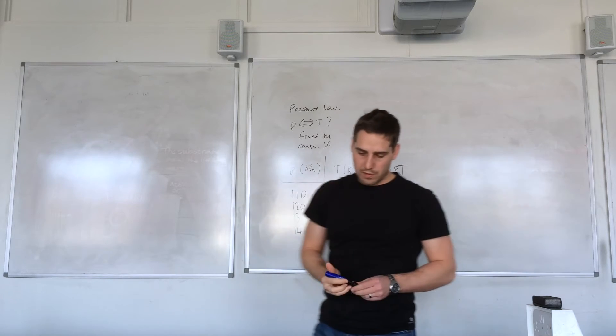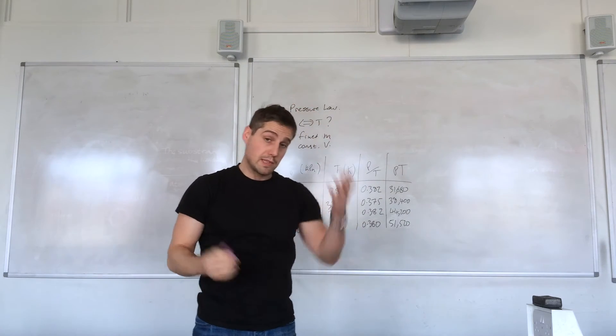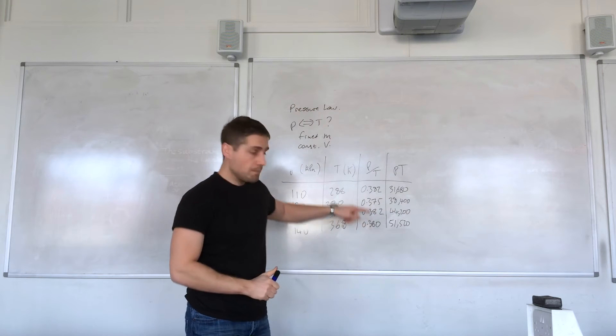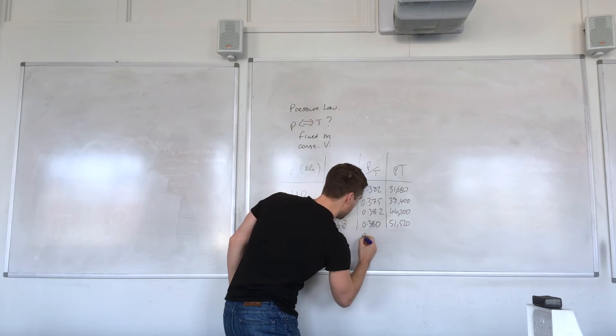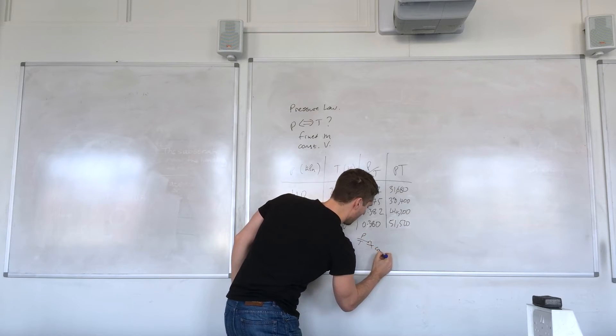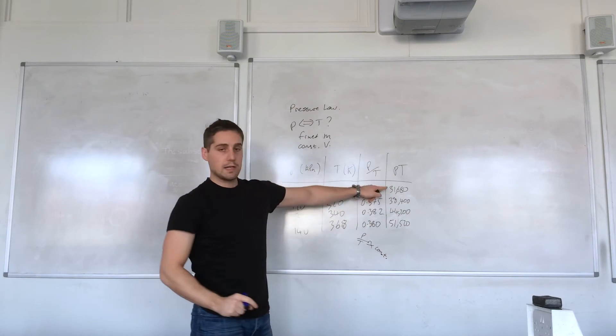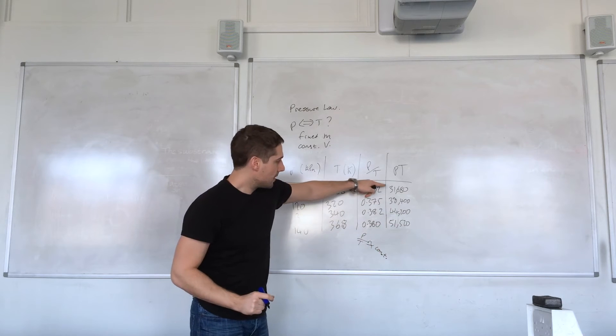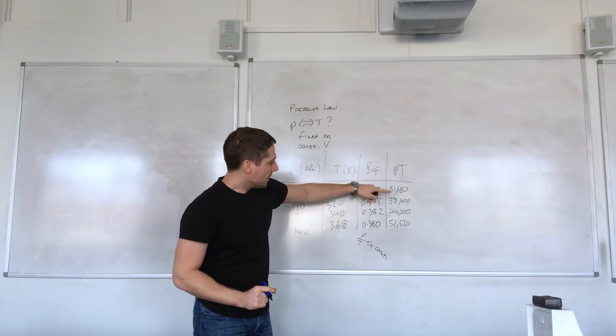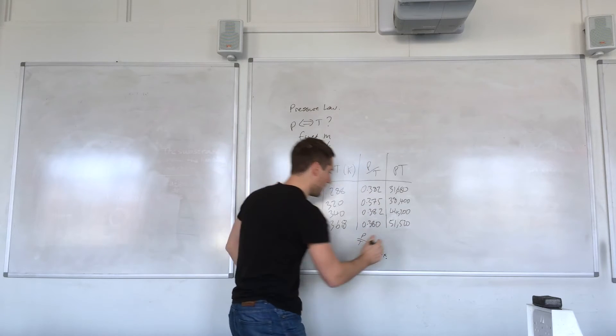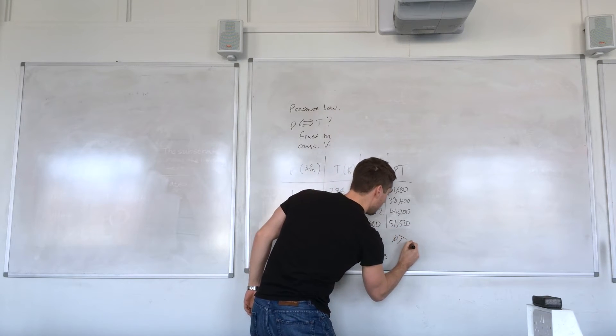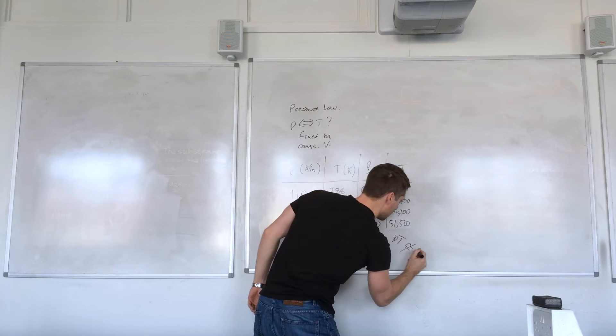We've done all the calculations that we need to test. As you can see these values, they are approximately constant. Whereas these values are definitely not constant. These are going up 31,000, 38,000, 44,000, 51,000. So Pt is not approximately constant.